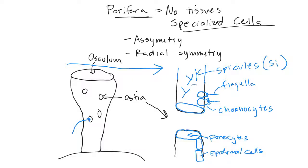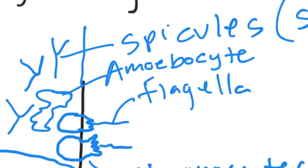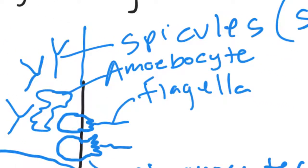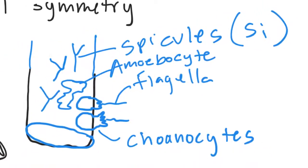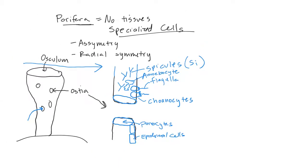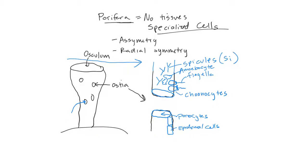There's one other cell type. This is basically an undifferentiated amoebocyte. They kind of look like an amoeba. And they can become choanocytes or they can become a porocyte. They're kind of like a stem cell, just in the fact that they differentiate into these other different types of cells. That would be the equivalent of that in a sponge. Those are porifera. Any questions?